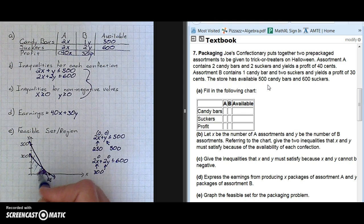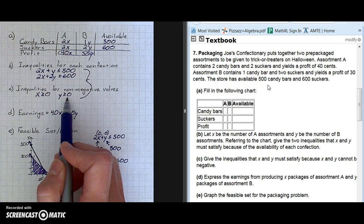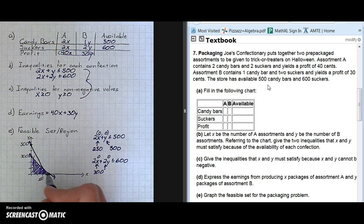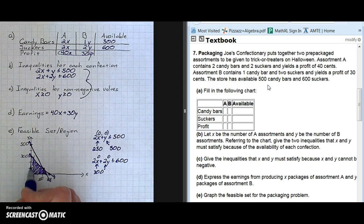Our feasible region must be in the first quadrant because we know our X value must be greater than 0, and our Y value must be greater than or equal to 0. So we end up with a polygon, a four-sided polygon, contained by the X axis, the two lines, and the Y axis.